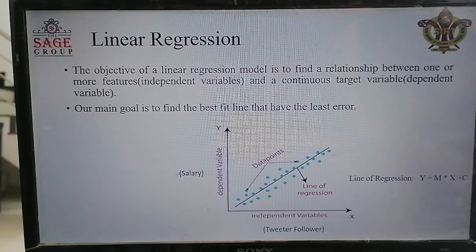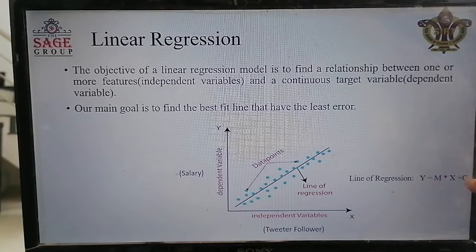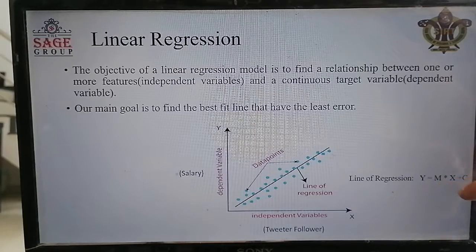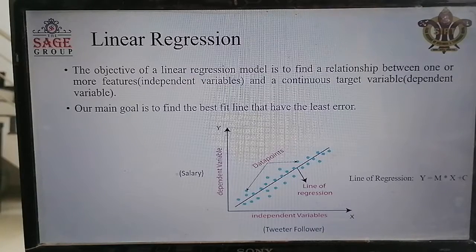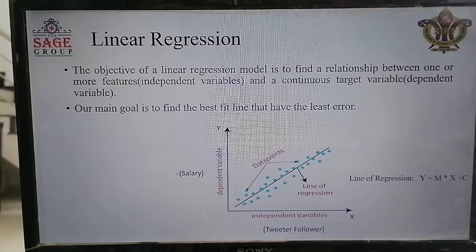The line of regression will be like this: y = mx + c, where y is the output, x is the input, and m and c are the model parameters. These parameters are required to be learned through the training process. For correct prediction, the optimized values of m and c are very much required.